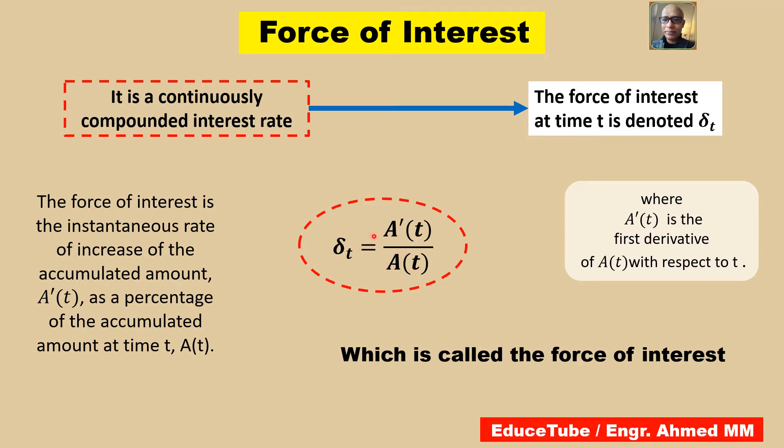And from this expression, we can say the force of interest, this δ_t, is the instantaneous rate of increase of the accumulated amount A'(t) as a percentage of the accumulated amount at t, which is A(t). That's why we call this the force of interest.